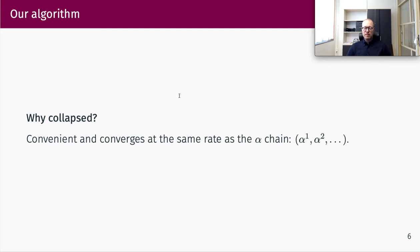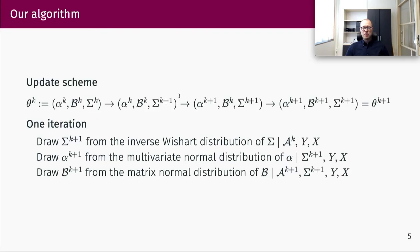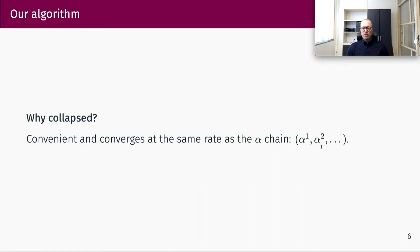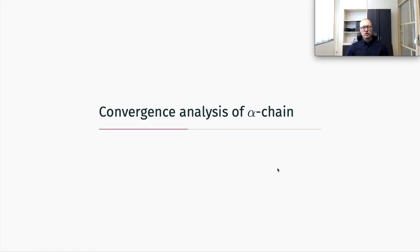Why do we consider a collapsed Gibbs sampler? First, it's convenient and easy to construct. As we will see, it also allows us to establish convergence rates based on only the alpha chain. By the alpha chain, I mean if you run this collapsed Gibbs sampler and only consider the alpha values, ignoring beta and Sigma. These alphas form a Markov chain, and it can be proven using well-known results that the convergence rate of this marginal chain is the same as the convergence rate of the full chain. So in our analysis, we focus just on this marginal alpha chain.